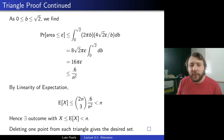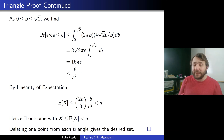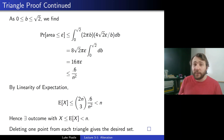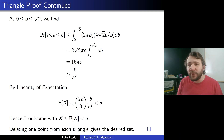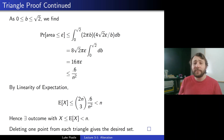That concludes our lesson for today. We saw three different examples — from Ramsey numbers to independent sets to triangles from combinatorial geometry — where we used the method of alteration to alter the random outcome to get our desired object. Until next time, see you then!